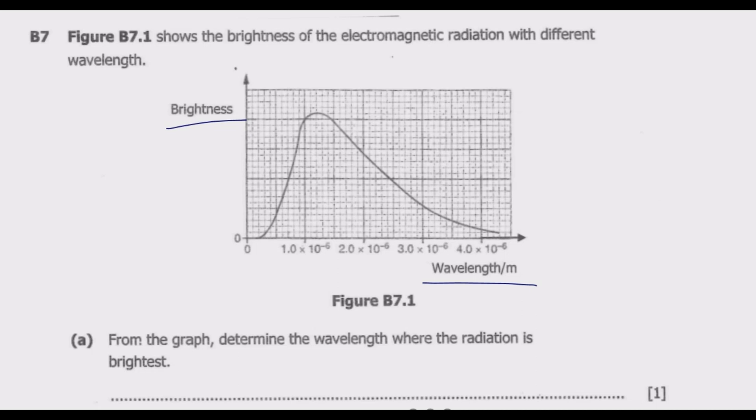Question A: from the graph determine the wavelength where the radiation is brightest. As we move upward on the vertical axis the brightness increases. As you move away from zero along the x-axis the wavelength increases. Let us see where brightest is happening.